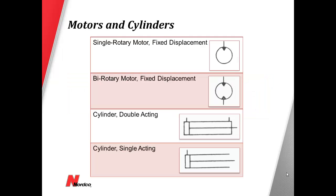Examples of motors and cylinders. A motor will always be identified by the internal arrow pointing into the center of the circle. Cylinders can be either double acting or single acting.